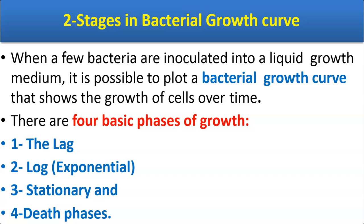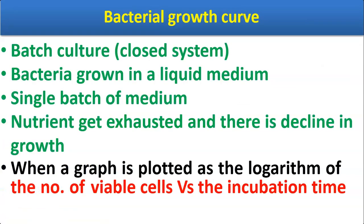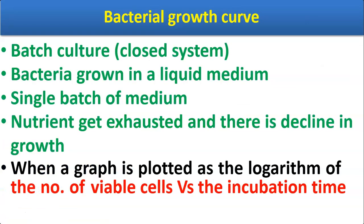There are four basic phases of growth in the bacterial growth curve. The first phase is the lag phase, also called the initial phase. Second is the log phase, also called the exponential phase. Third is the stationary phase, and the fourth is the death phase. This growth curve is studied in a batch culture — a closed system where bacteria are grown in a liquid medium.